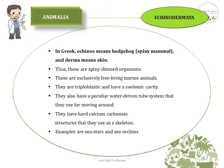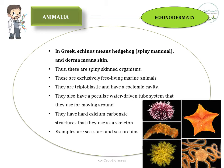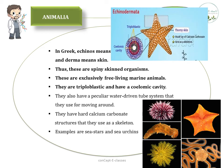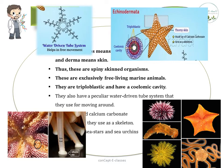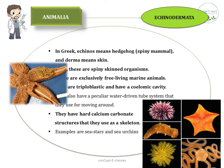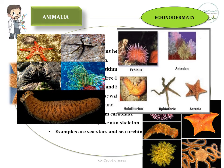The eighth division under kingdom Animalia is Echinodermata. In Greek, 'echinos' means hedgehog — a spiny animal — and 'derma' means skin, so these are called spiny-skinned organisms. Observing these organisms, we can see spines over the body. These are exclusively free-living marine animals. They are triploblastic and have a coelomic cavity. They also have a peculiar water-driven tube system used for movement, and a hard calcium carbonate skeleton. Examples are sea stars and sea urchins.